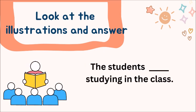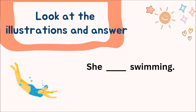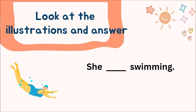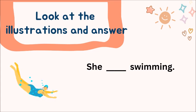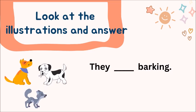The students ___ studying in the class. Yes, and the answer will be: are. Let's take this one — she ___ swimming. Yes, she is swimming. Let's take another sentence: they ___ barking. Look at them, how they are barking. So the answer is: they are barking.